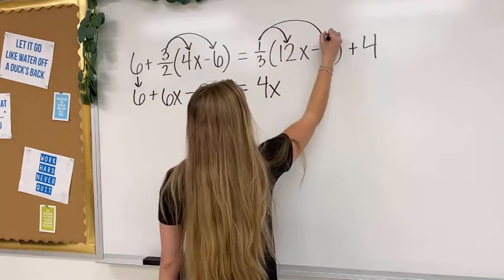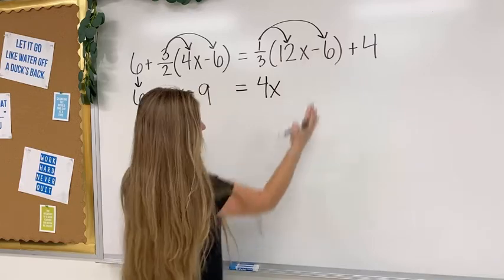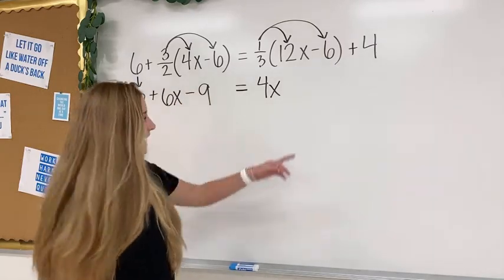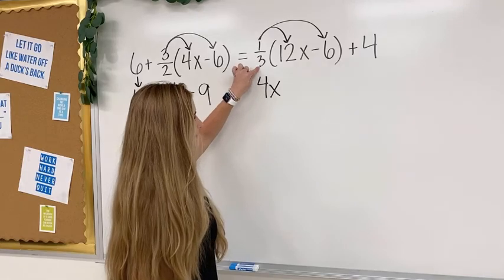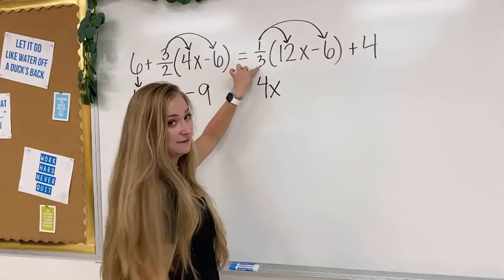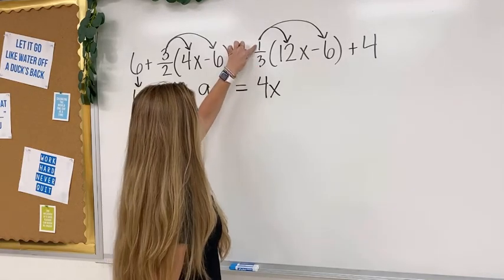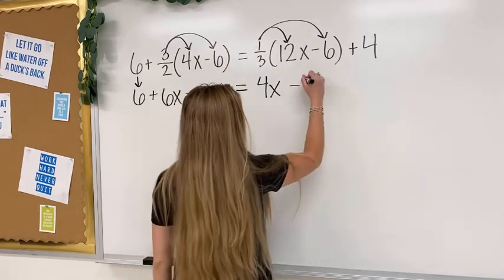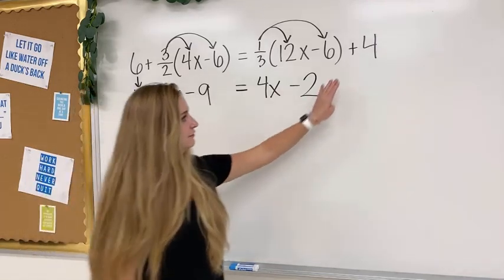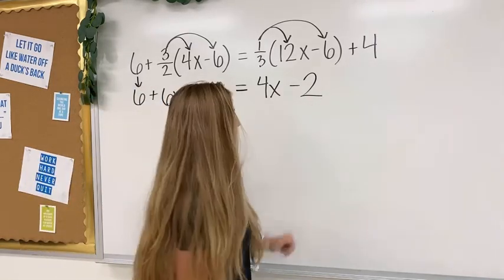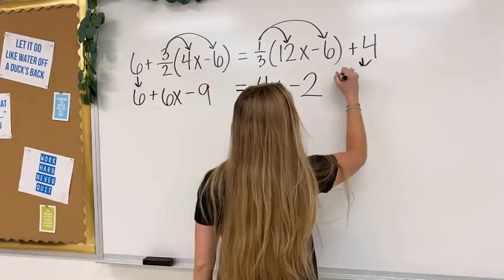Then, let's do it again. 1 third times negative 6 is really negative 6 divided by this bottom number. Negative 6 divided by 3 is negative 2, and then I just multiply it by 1, which gives me the same thing, negative 2. Then, I realize that this 4 is not in the parentheses at all, so all I do is just bring it down.